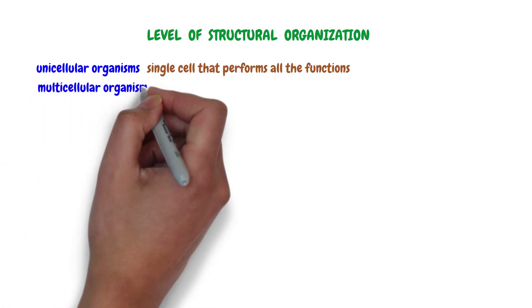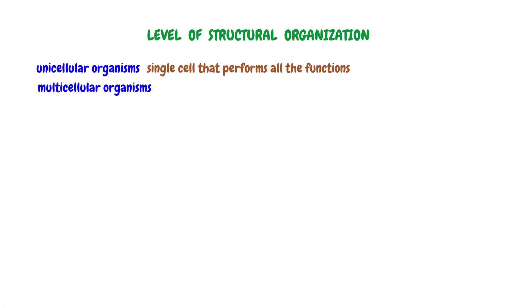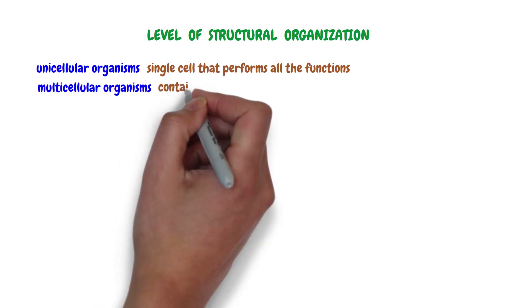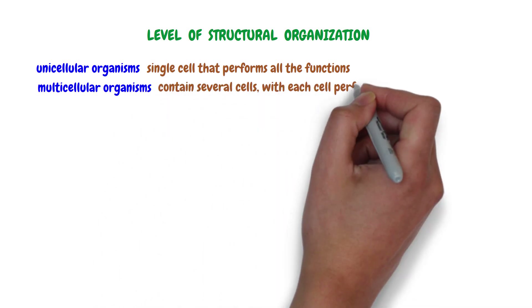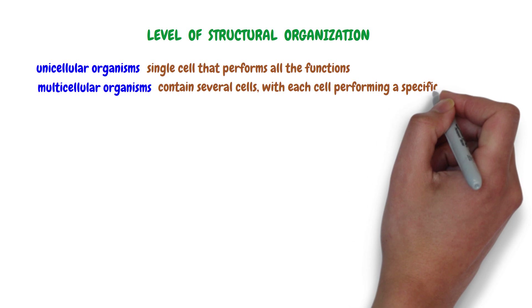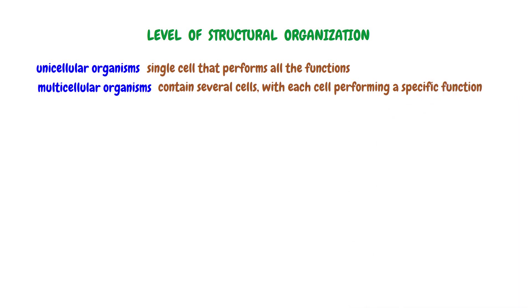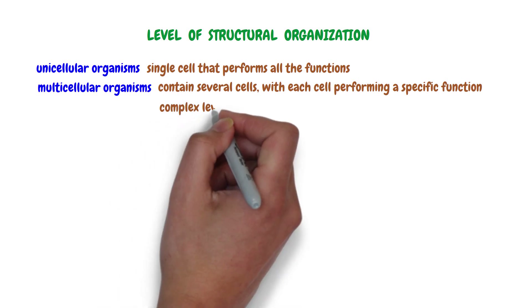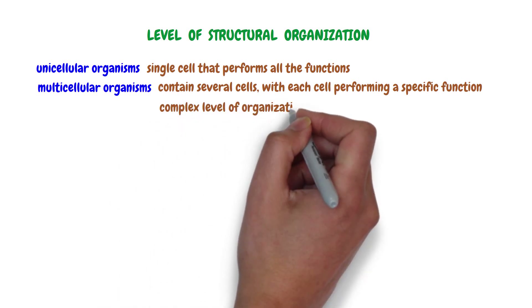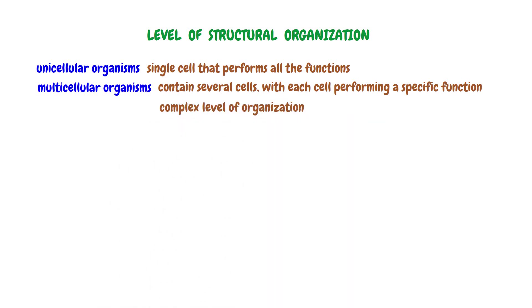Multicellular organisms are organisms composed of many cells. These kinds of organisms contain several cells, with each cell performing a specific function, collectively sustaining the life of the organism. Multicellular organisms have a complex level of organization.